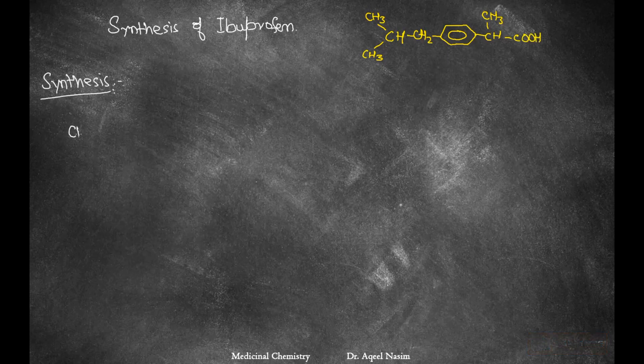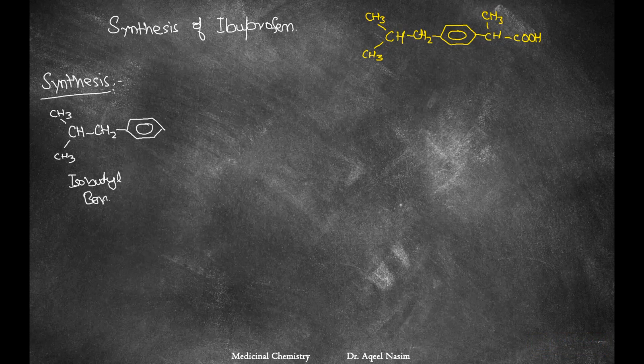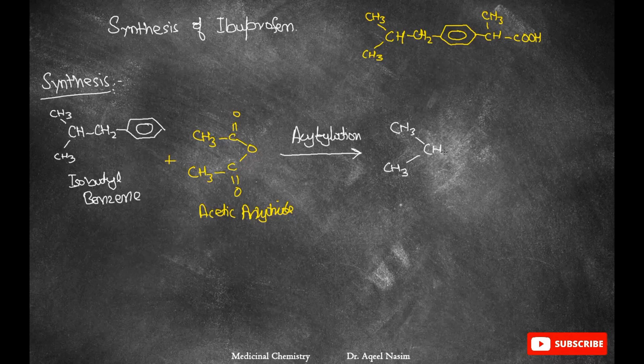Let's discuss the synthesis steps involved in ibuprofen synthesis. The initial compound is isobutylbenzene, which reacts with acetic anhydride. These two undergo acetylation, resulting in formation of a derivative.